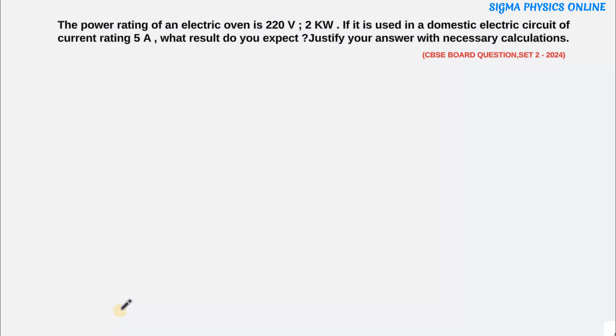It's a question from the electricity chapter and it reads: the power rating of an electric oven is 220 volt, 2 kilowatt. If it's used in a domestic electric circuit of current rating 5 ampere, what result do you expect? Justify your answer with necessary calculations.